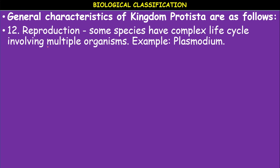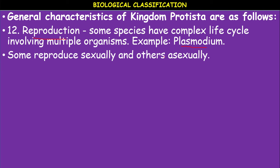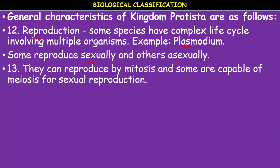Regarding reproduction, some species have complex life cycles involving multiple organisms — male and female. For example, reproduction in Plasmodium. Plasmodium is a Protist — a parasitic protozoan. Some reproduce sexually and some asexually, showing diversity in reproduction. Asexual reproduction occurs by fission or mitosis cell division, while meiosis is involved in the production of gametes in sexually reproducing Protista.